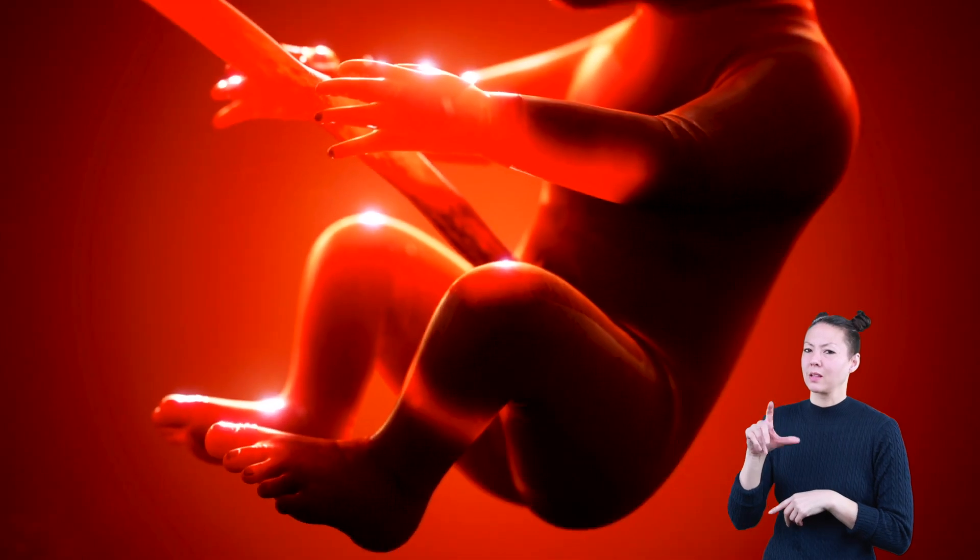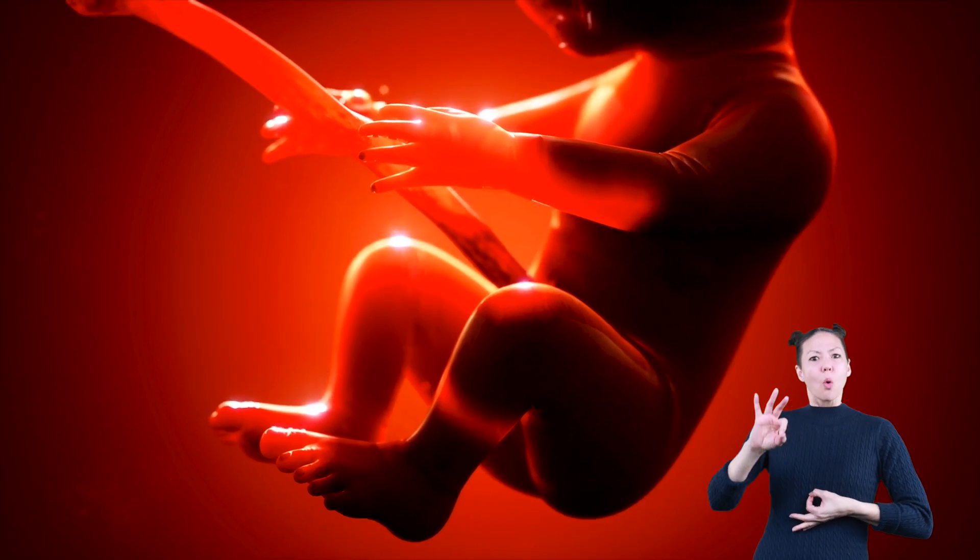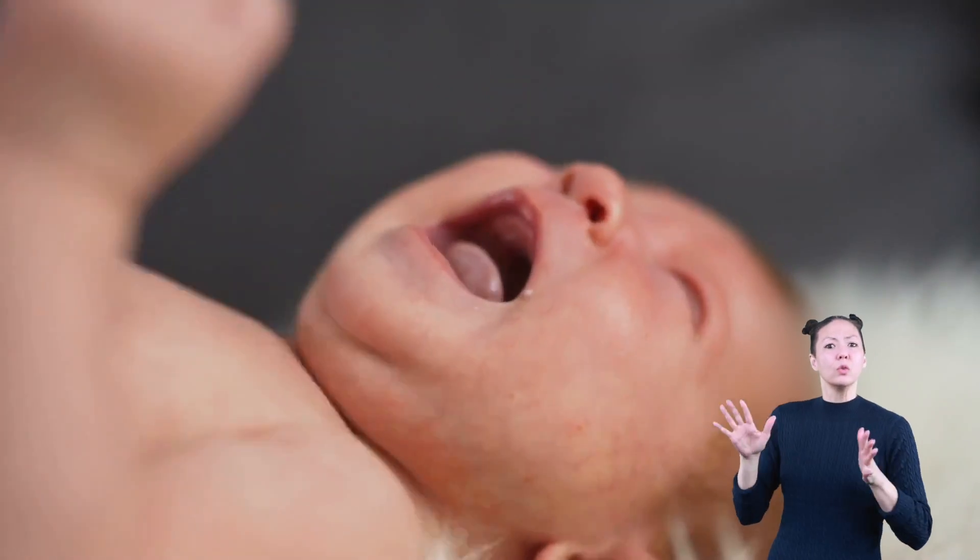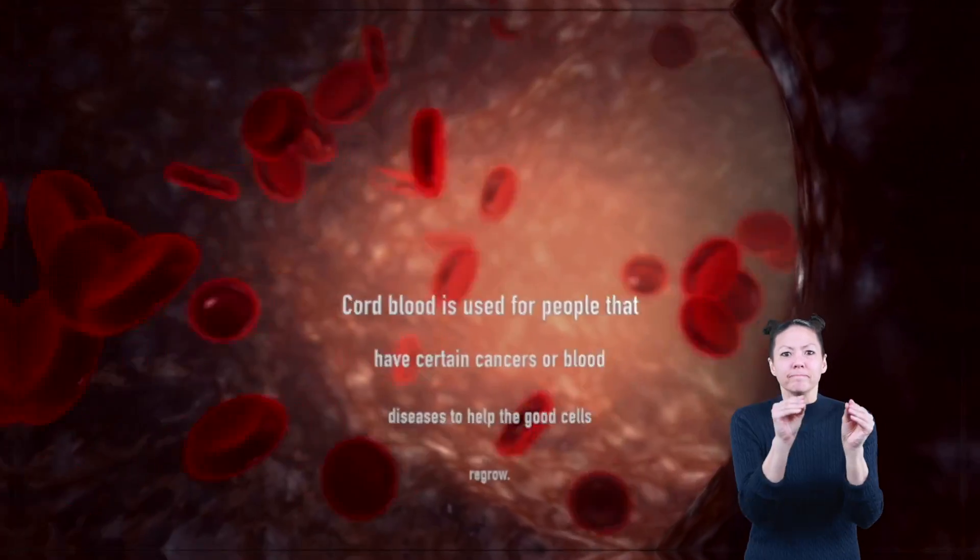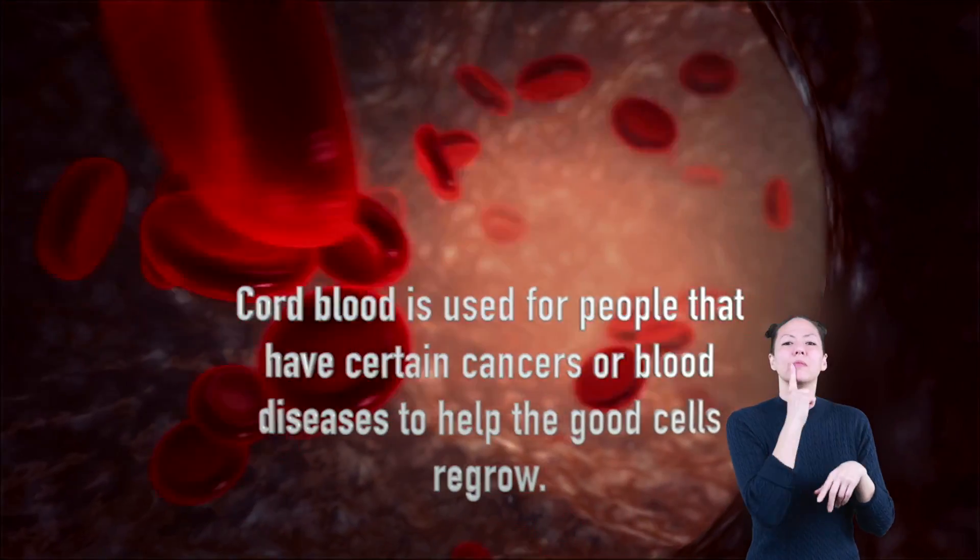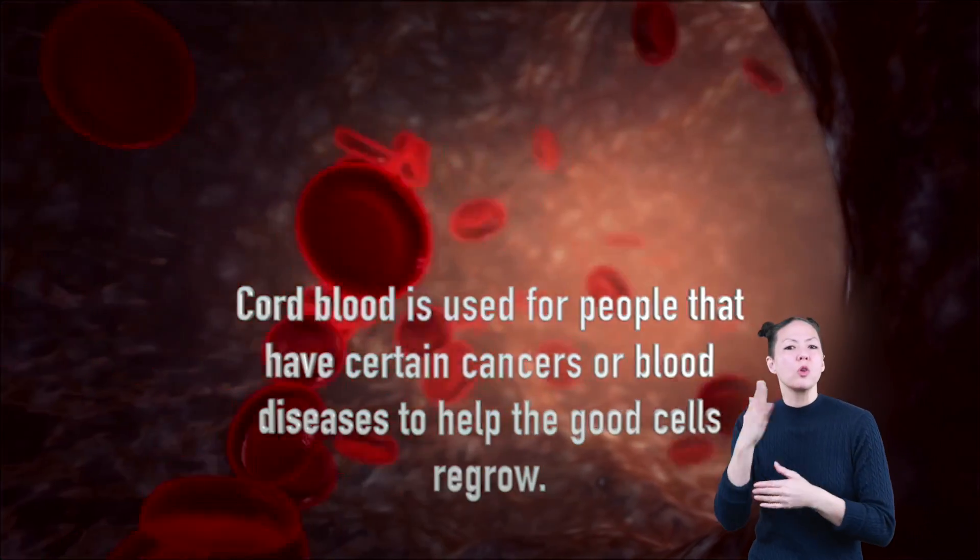Stem cells are also found in a baby's umbilical cord. After a baby is born, a doctor saves the blood from the umbilical cord. Cord blood is used for people that have certain cancers or blood diseases to help the good cells regrow.